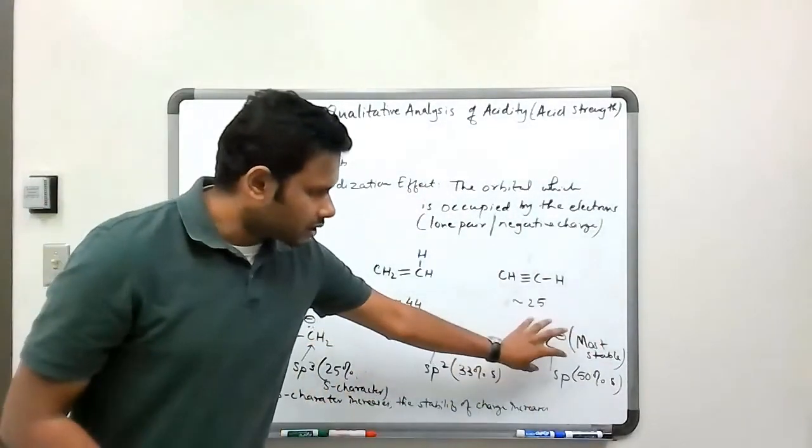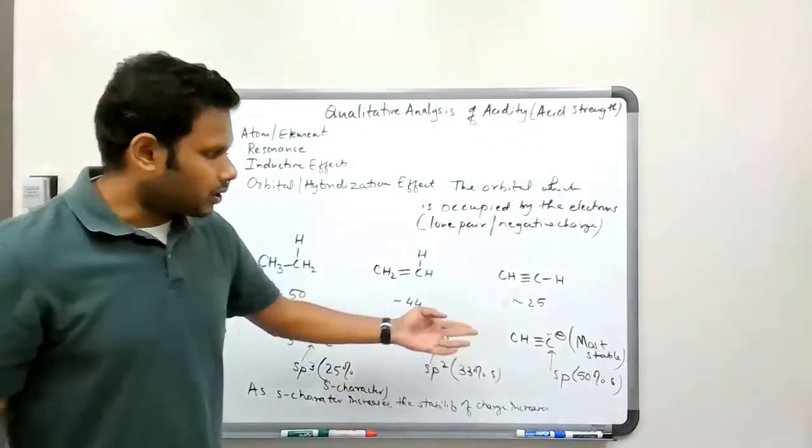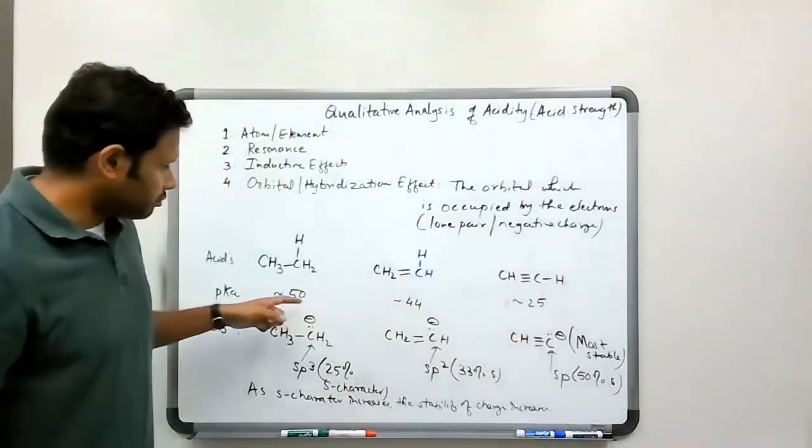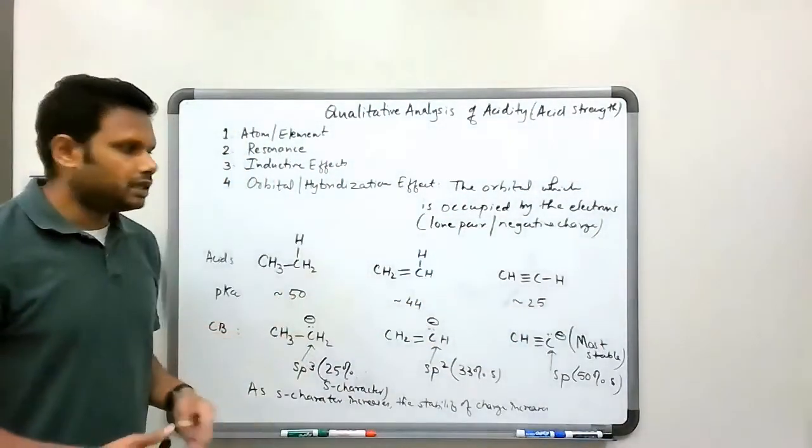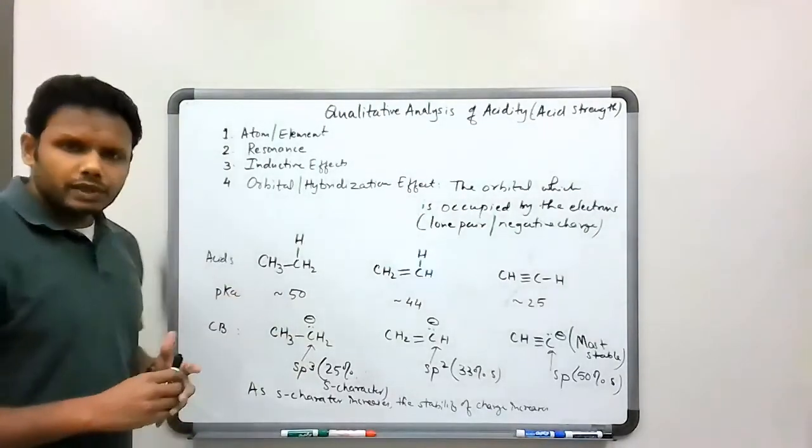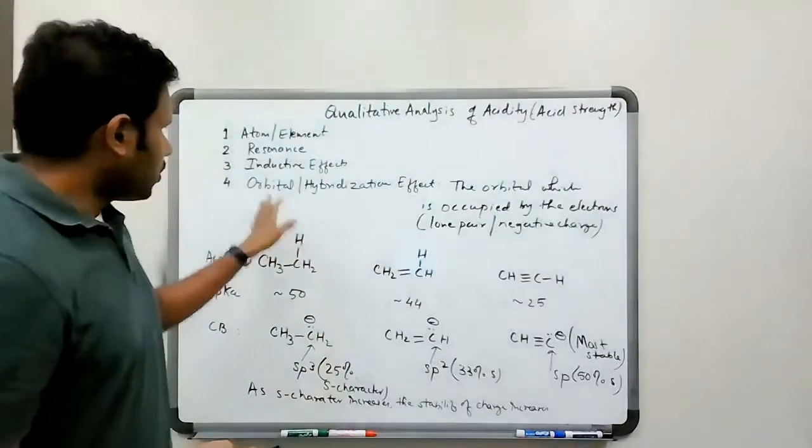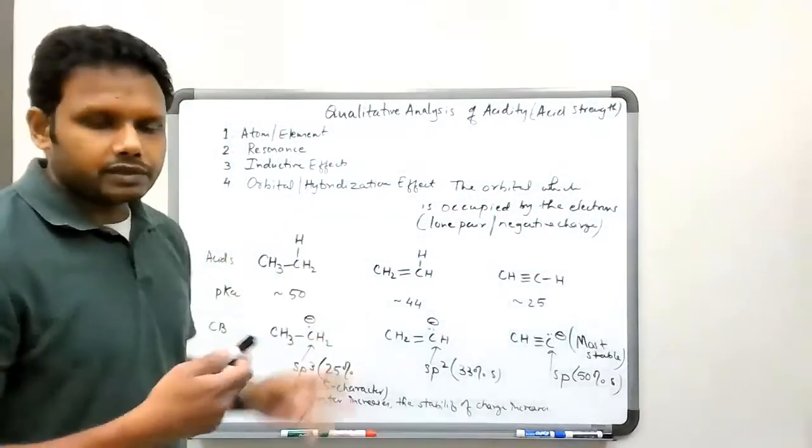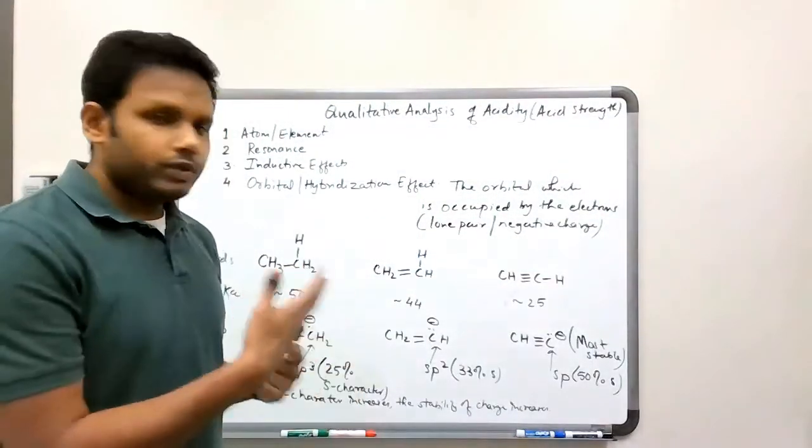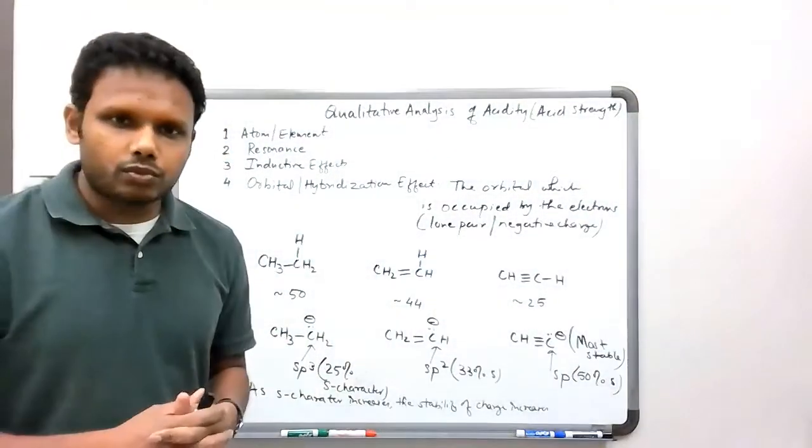And so since this conjugate base is the most stable, what that means is the corresponding acid is the strongest acid, and that is what is basically reflected in the pKa values for these molecules. So that's the last effect where we can use hybridization, or the orbital where the electron is present, to understand which is a stronger acid compared to the other ones.